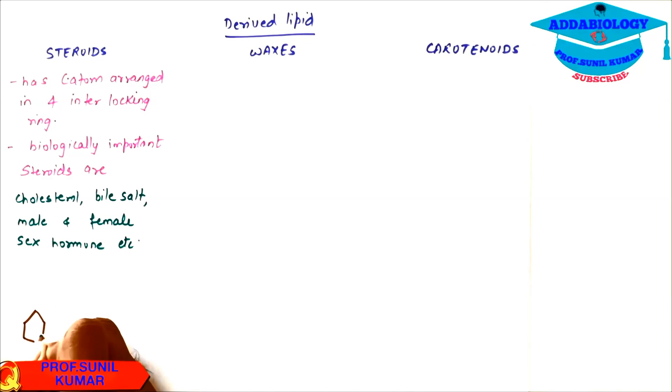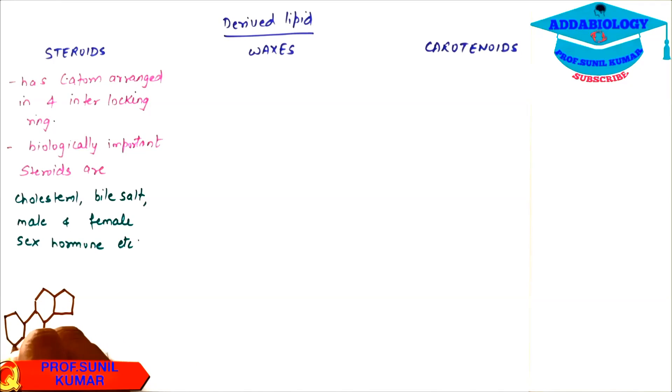When we talk about steroids, it has four rings. The structure is just representing four rings which are interconnected to each other: number 1, 2, 3 and 4.